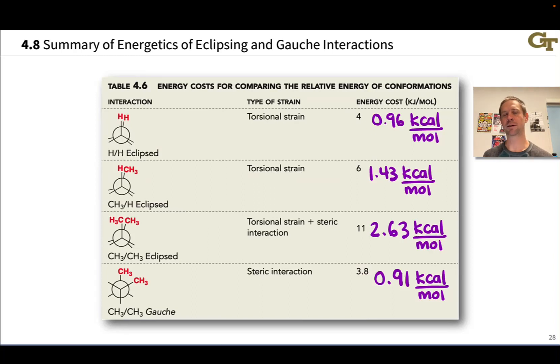One of the useful things we get out of these conformational analyses of acyclic alkanes like ethane, propane, and butane are these energy values associated with destabilizing interactions between groups that occur as a result of these bond rotations. Things like torsional strain and steric interactions when groups are eclipsing or in a gauche orientation.